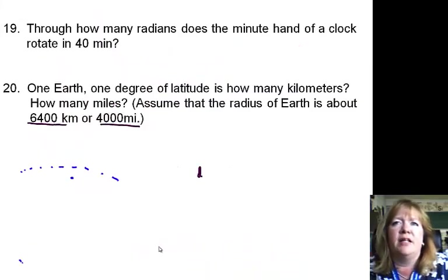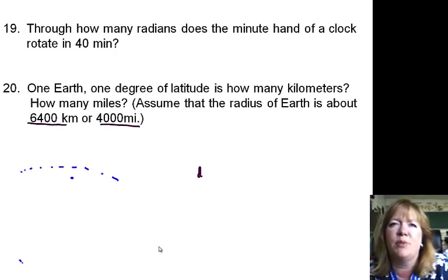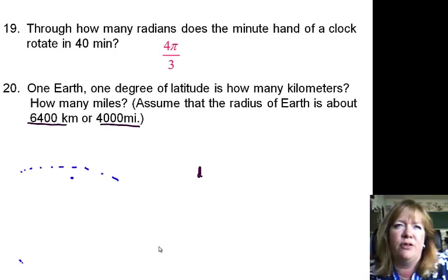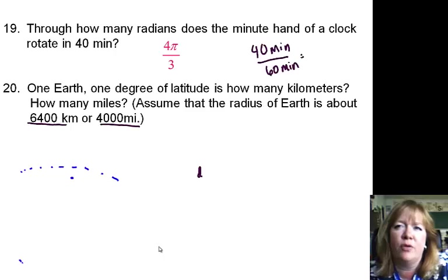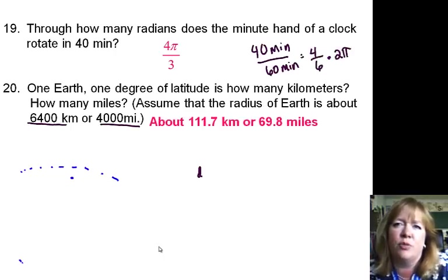Through how many radians does a minute hand of a clock rotate in 40 minutes? They're asking for a simple angle measure — you have to logic this out. The answer is 4 pi over 3. If you think about it, you have 40 out of 60 minutes. One full rotation is 60 minutes. So 40 out of 60 is 4/6 times 2 pi, which gives you 4 pi over 3 — so it's two-thirds of the way around.